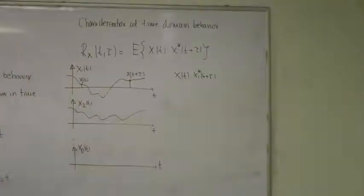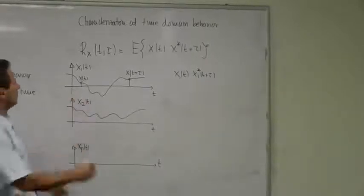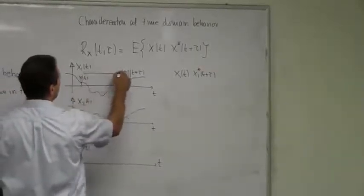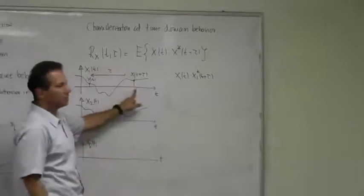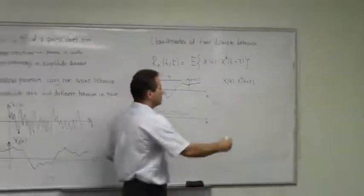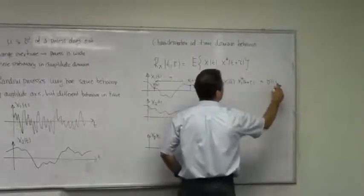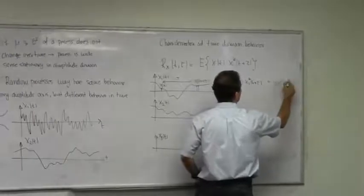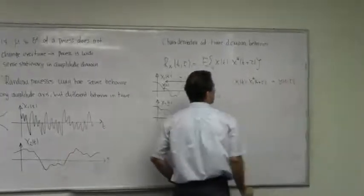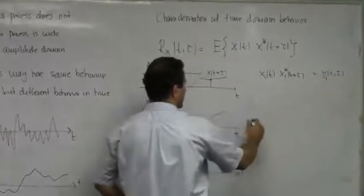So I form a product x1(t) times x1(t + τ). It's not important for real signals, but when signals are complex then it starts playing a role. I take this, move τ away, then take the value of the signal there and multiply. This is a new variable, let me call this y(t, τ) or y1(t, τ).